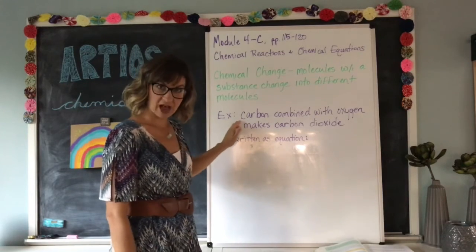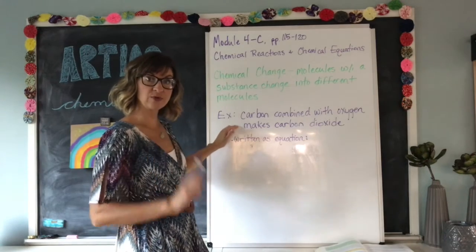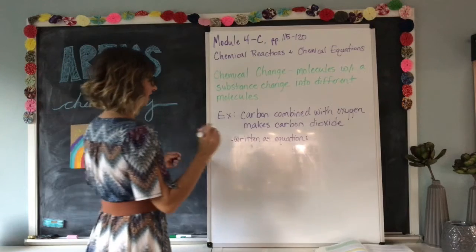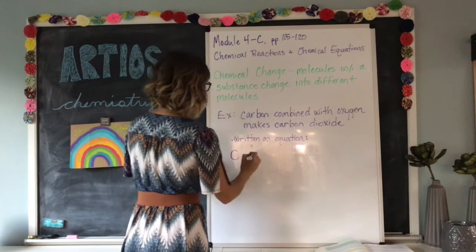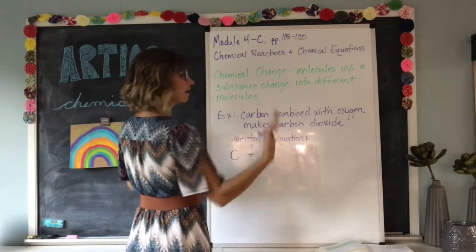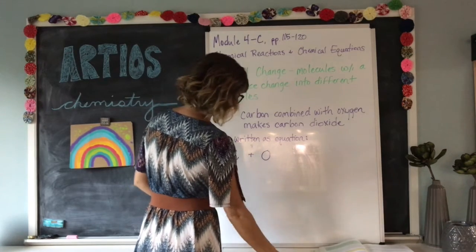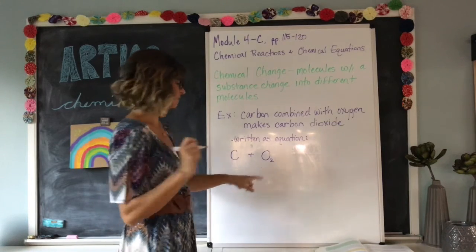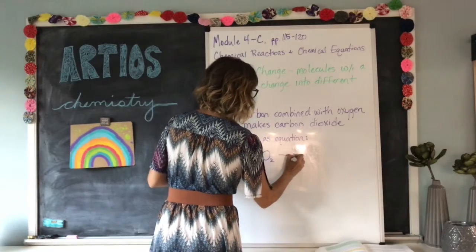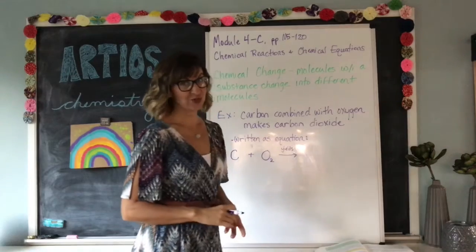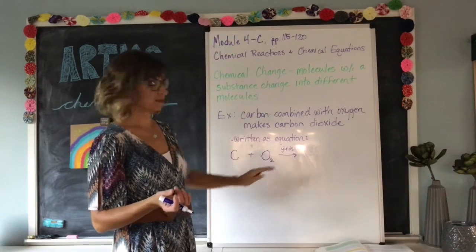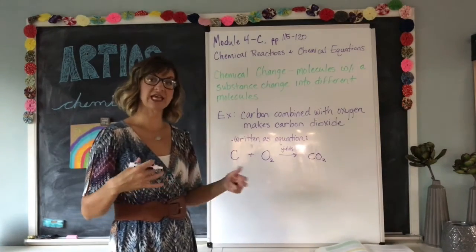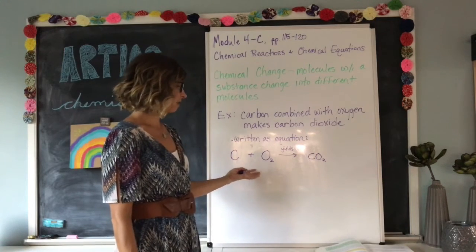For example, carbon combined with oxygen makes carbon dioxide. Chemists like to save time, so we write this as a chemical equation using the symbol C for carbon, a plus sign meaning 'combined with,' and O2 — oxygen is always present as O2, which we'll discuss shortly. The arrow means 'yields.' So: C plus O2 yields CO2. That's an example of a chemical equation.